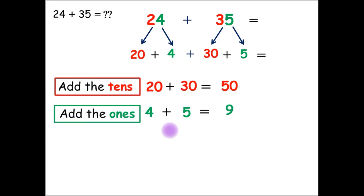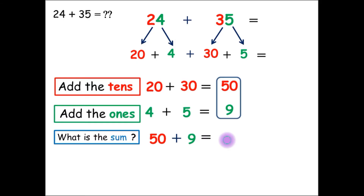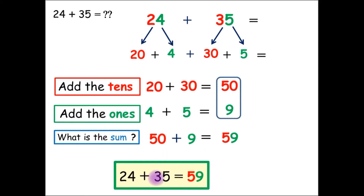And finally, we will add the results. The results are 50 and 9. So, 50 plus 9 equals 59. So, 24 plus 35 equals 59.